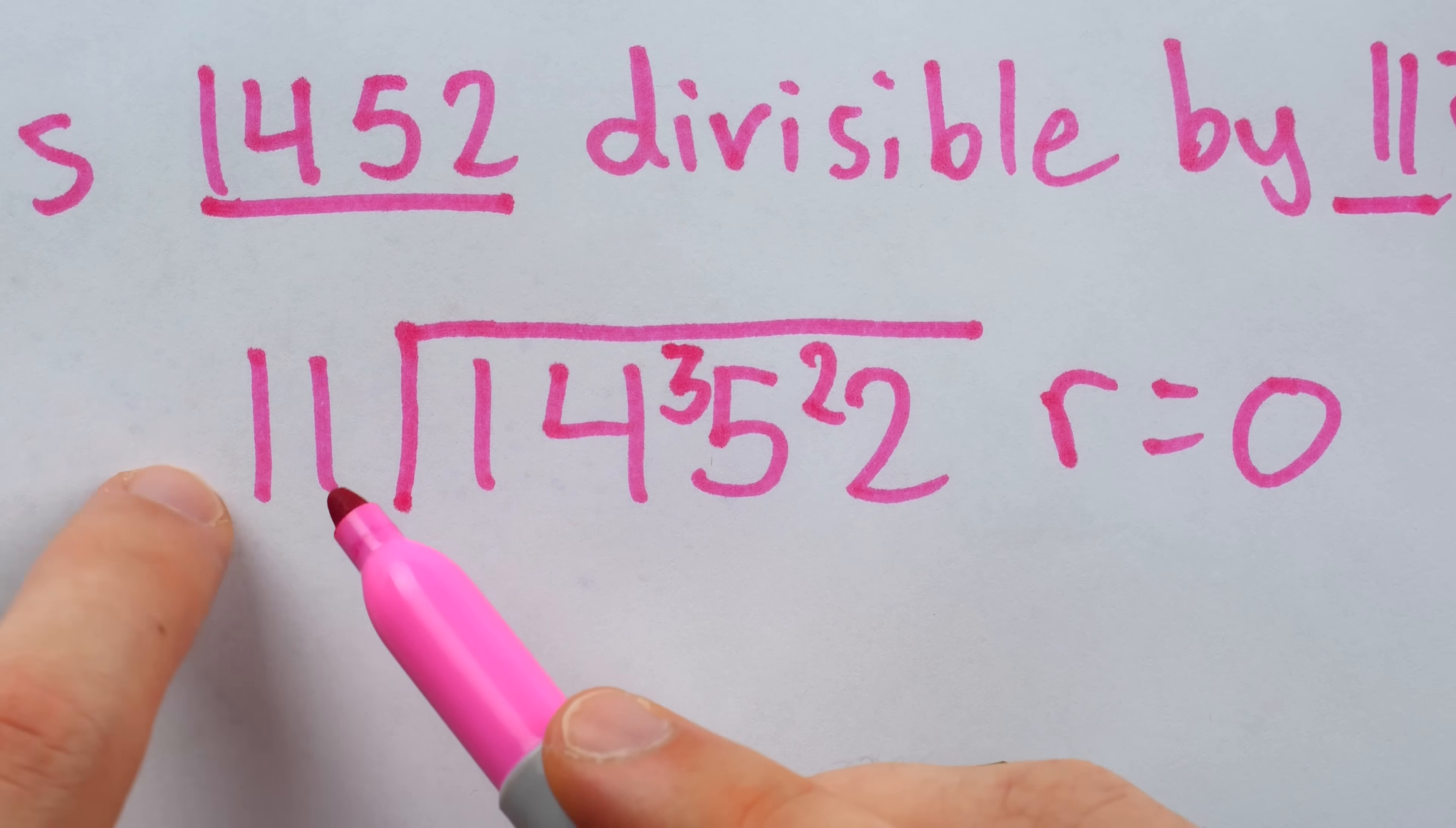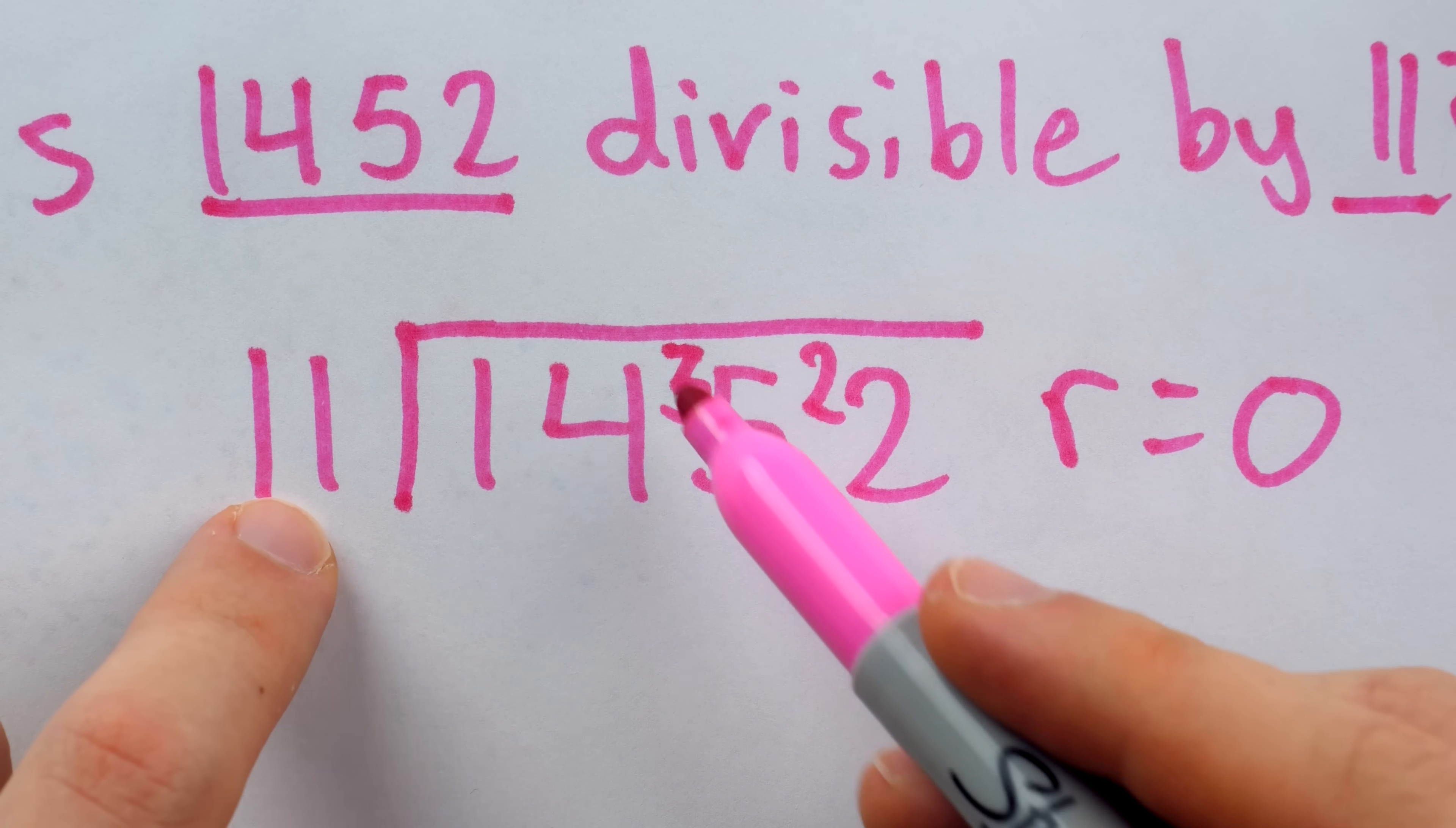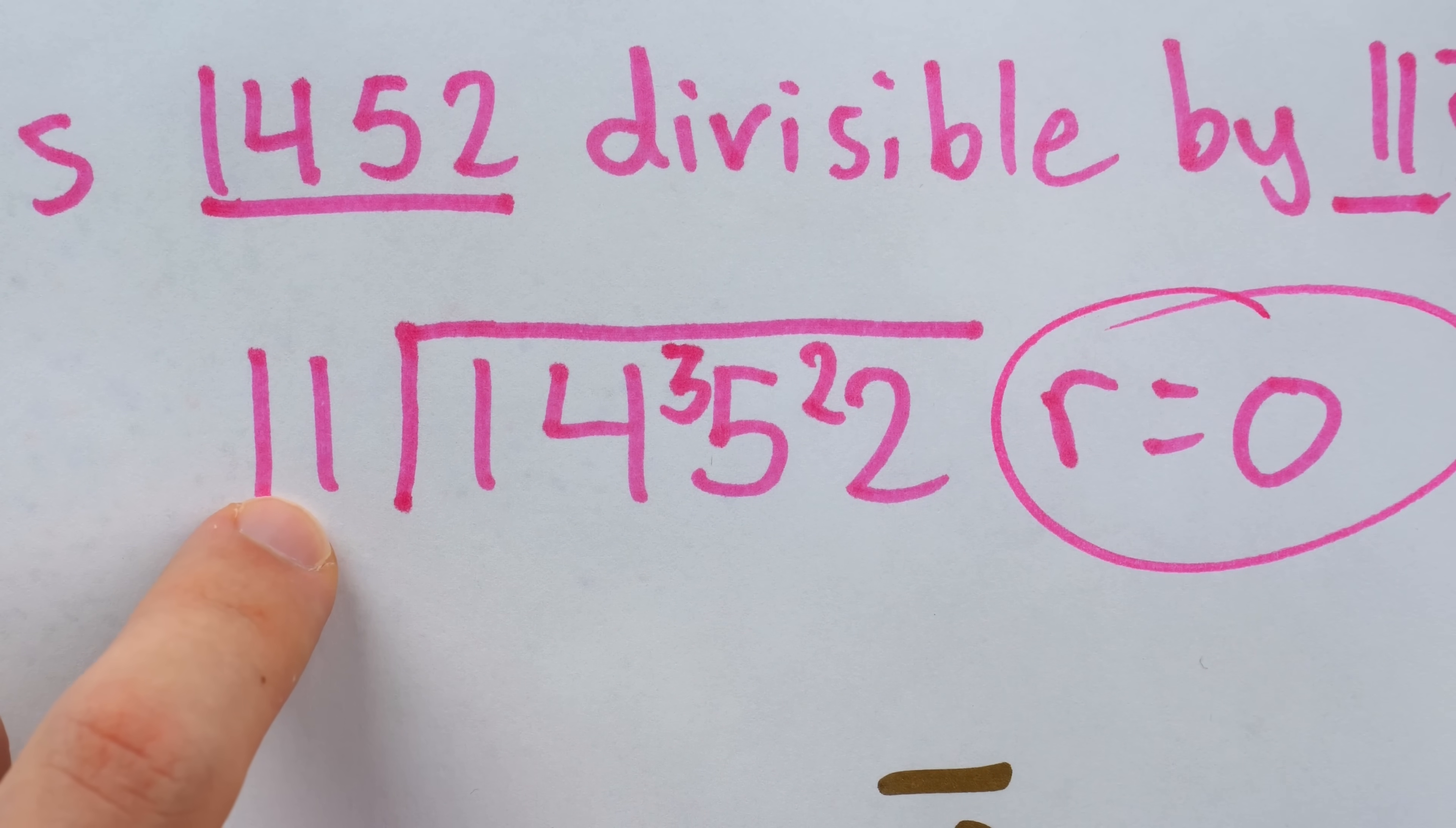Note that the mental arithmetic I did here was 11 goes into 14 once with a remainder of 3, and then 11 times 3 is 33. So 11 goes into 35 three times with a remainder of 2, and then 11 times 2 is 22. So it goes into 22 evenly with no remainder.